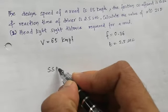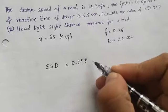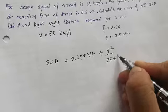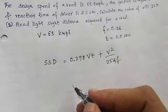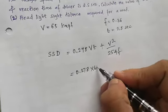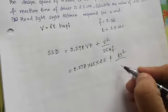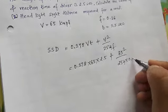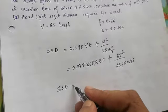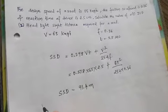The stopping sight distance is equal to 0.278 V×t plus V squared divided by 254F. So 0.278 times 65 times 2.5 plus 65 squared divided by 254 into 0.36. You'll get the SSD, stopping sight distance, as 91.4 meters.